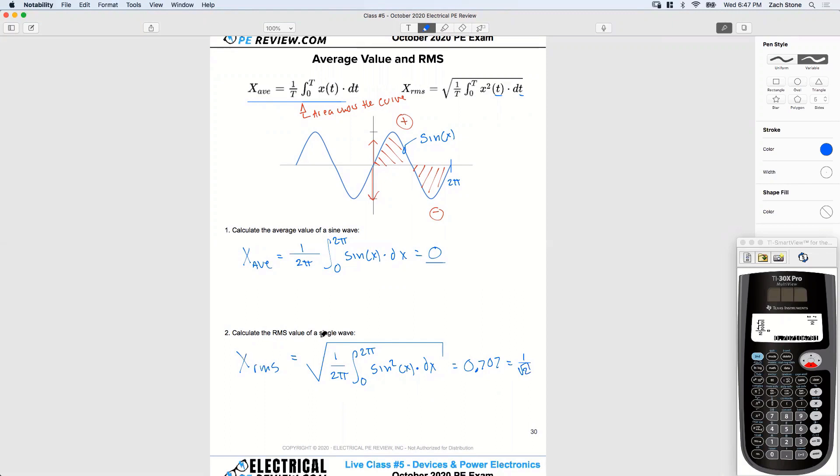So the RMS of a sine wave is the same as your peak divided by square root of 2.